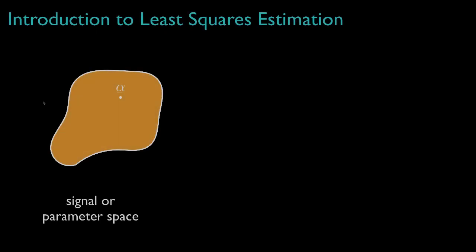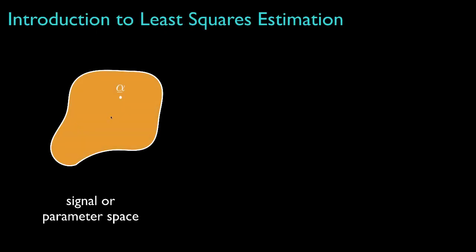Let's begin by thinking about the unknown parameter as a vector of values that exist in some parameter space. As a simple example, this parameter might contain only one value, which could be the air temperature in a room.